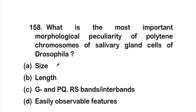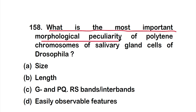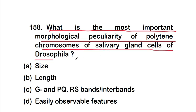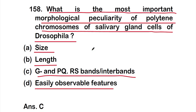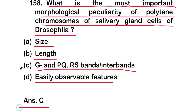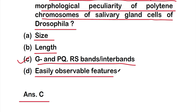Question 158: What is the most important morphological peculiarity of polytene chromosomes of salivary gland cells of Drosophila? Options: A — size; B — length; C — bands and interbands; D — easily observable features. The correct answer is option C — bands and interbands are the most important morphological peculiarity of polytene chromosomes.